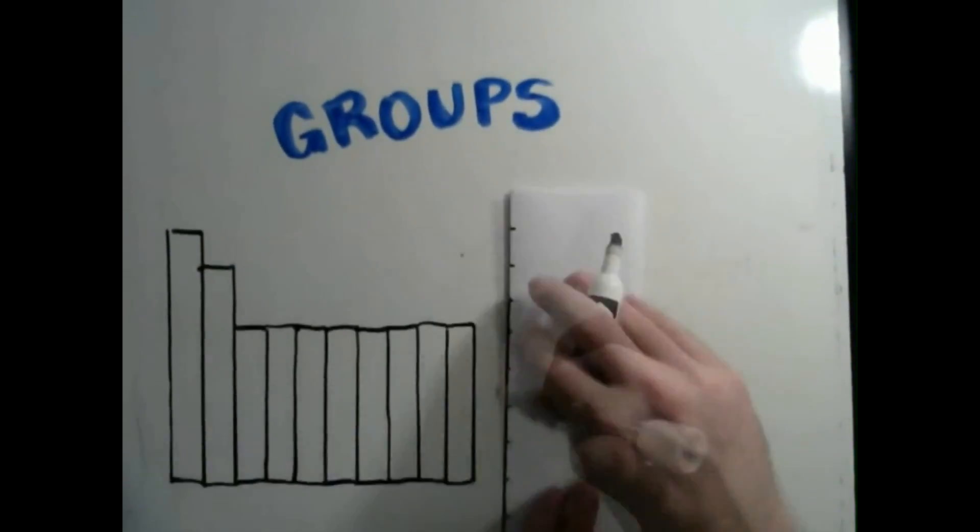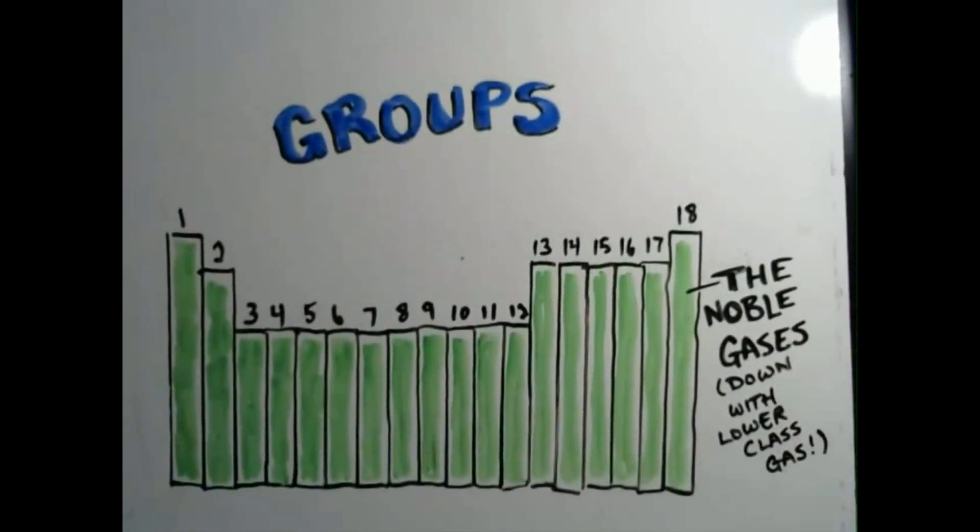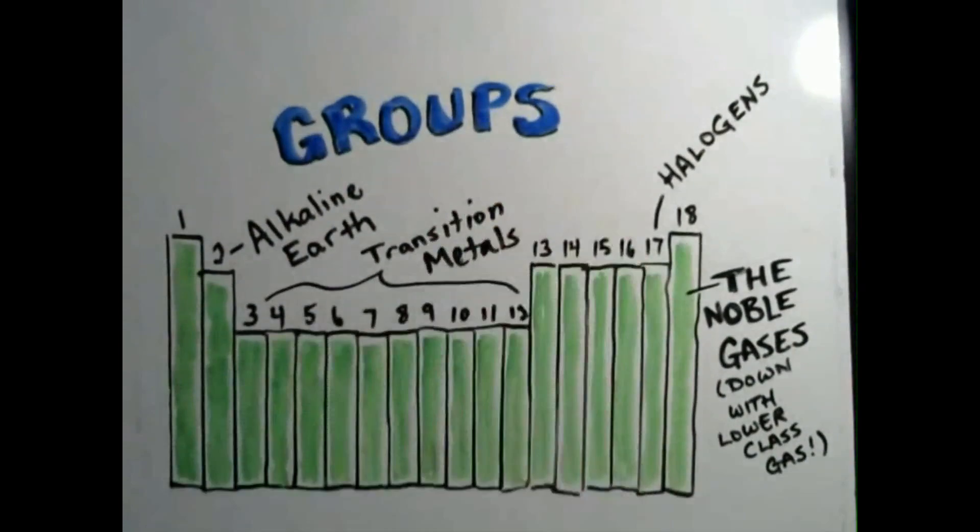Mendeleev organized all the known elements in two ways. First he put elements into columns called groups. Elements in groups act in similar ways, like the noble gases and halogens. There are 18 groups in all.